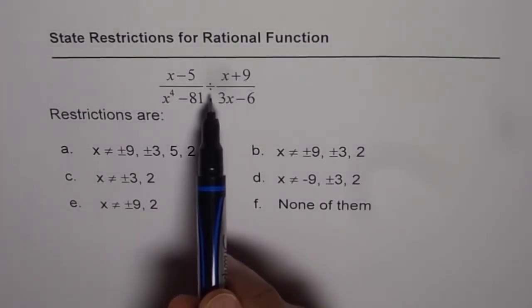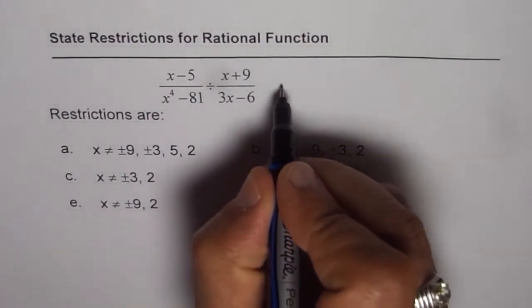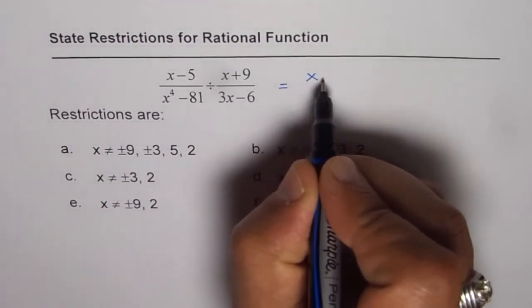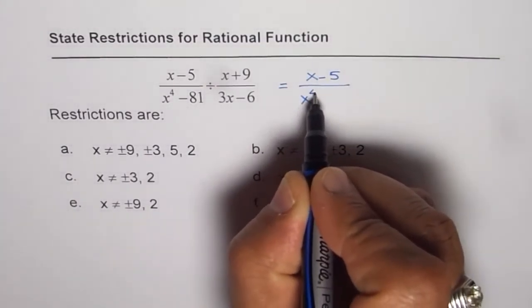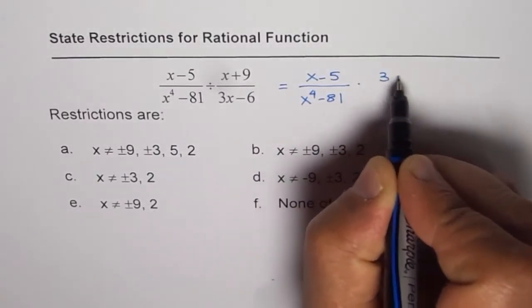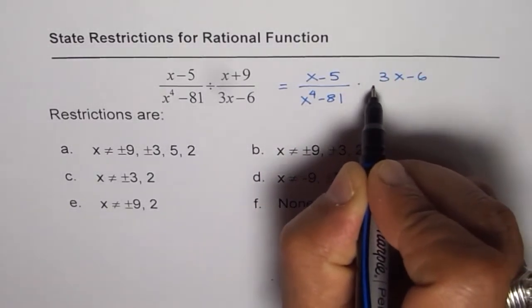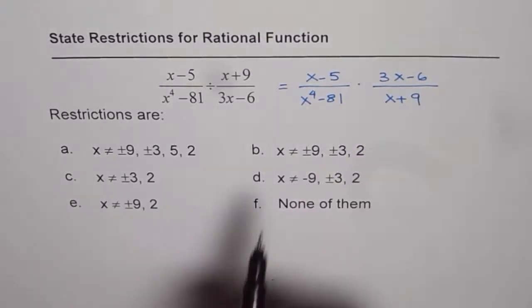since division is the reciprocal of multiplication, we need to consider the numerator of the divisor also. This expression can be written as (x-5)/(x^4-81) times (3x-6)/(x+9).